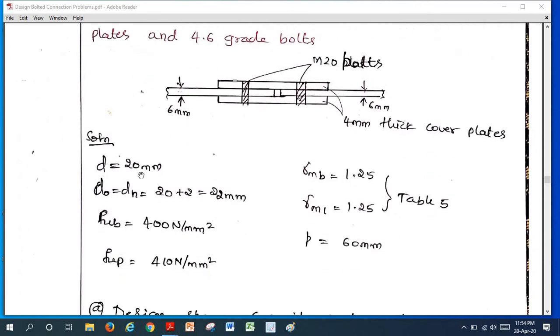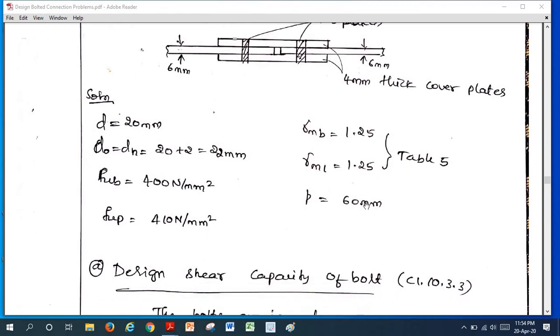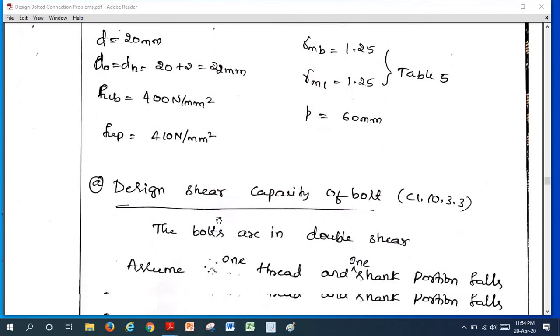Here the given data: 20 mm diameter bolt, bolt hole 22 mm should take from table number 19, the 2 mm clearance, ultimate strength of the bolt 400, ultimate strength of the plate 410 newton per millimeter square, gamma m0 and gamma m1 used to take from table number 5, pitch is 60 millimeter.